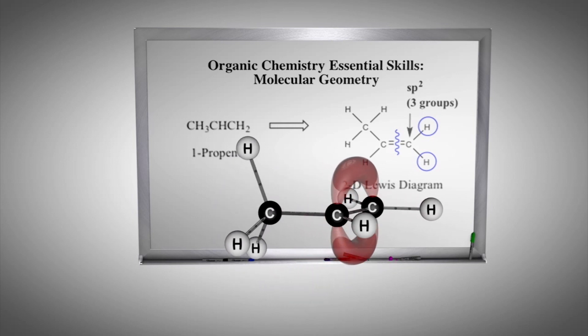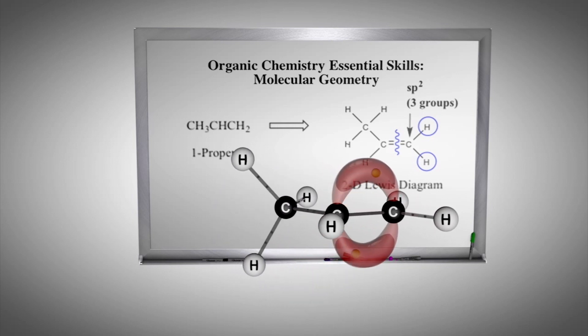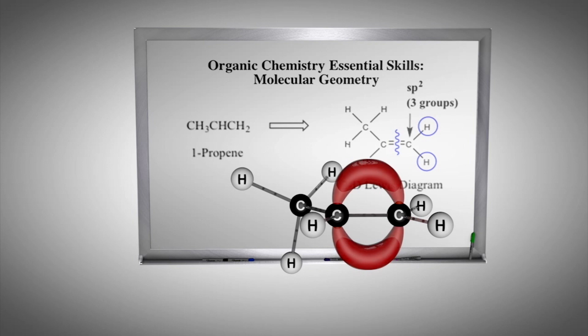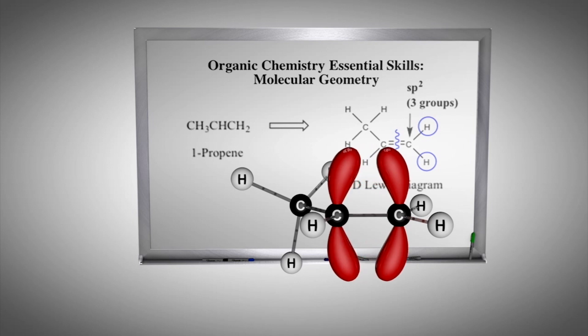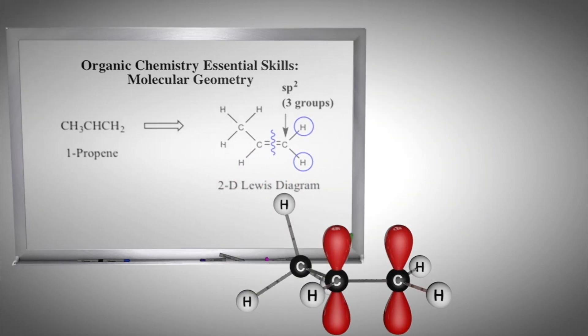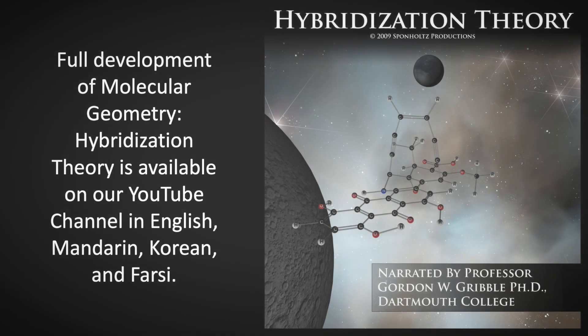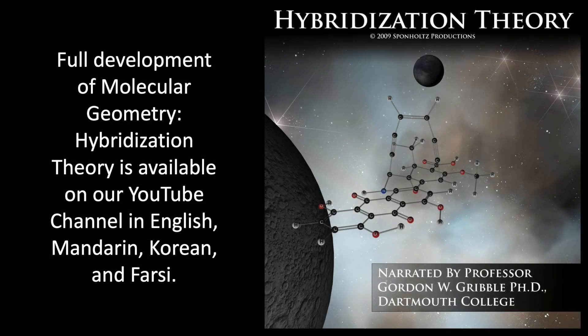Notice that the methyl group can spin freely about the C-C sigma bond, while the pi bond affords no rotation. A more thorough treatment of molecular geometry concepts and hybridization theory is available.